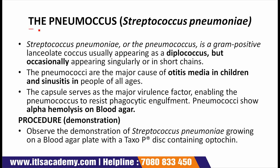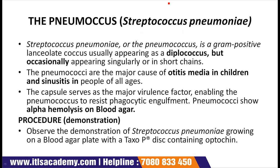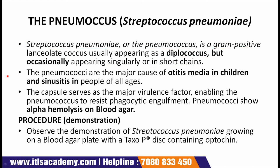Next comes the pneumococcus or streptococcus pneumoniae. First point: streptococcus pneumoniae or the pneumococcus is a gram positive lanceolate coccus, usually appearing as a diplococcus but occasionally appearing singularly or in short chains. Pneumococci are frequently found as normal flora of the nasopharynx of healthy carriers.